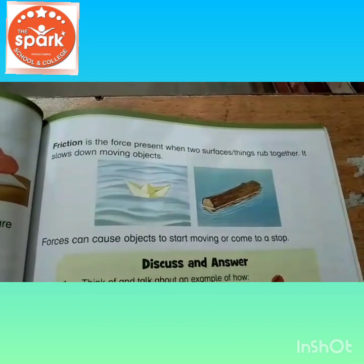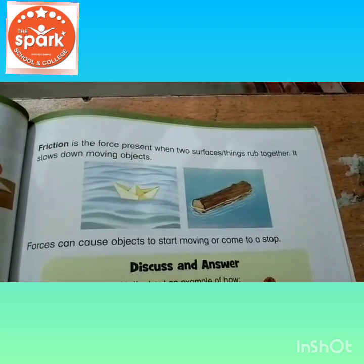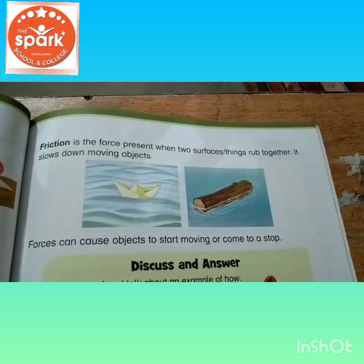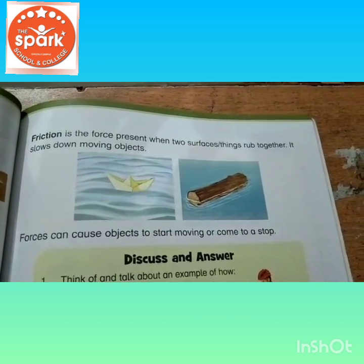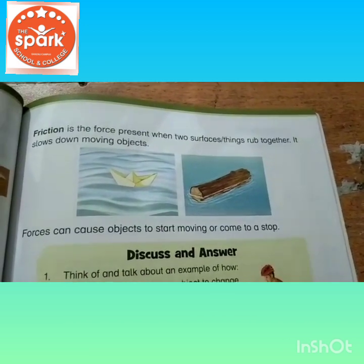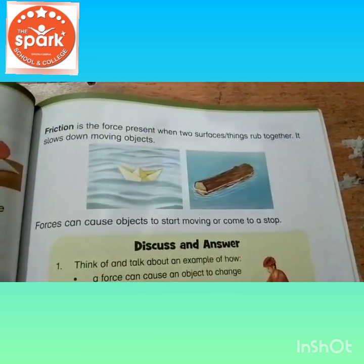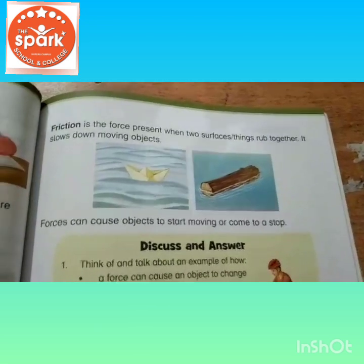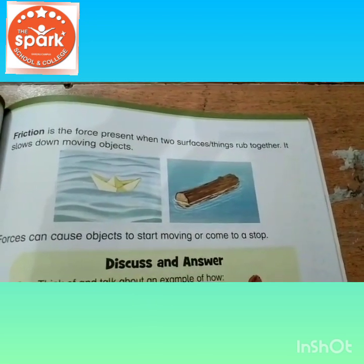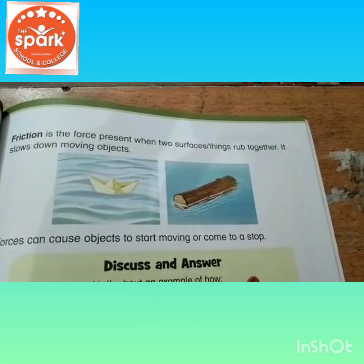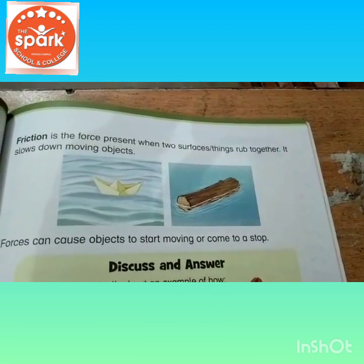Friction — friction is ragar, friction ka matlab hai ragar. It is the force present when two surfaces rub together — jab doh zaminein, chizhe ragar karti hai, toh friction apply hooti hai. It slows down moving objects — yeh chizho ko aista karne mein bhi madad kerti hai.